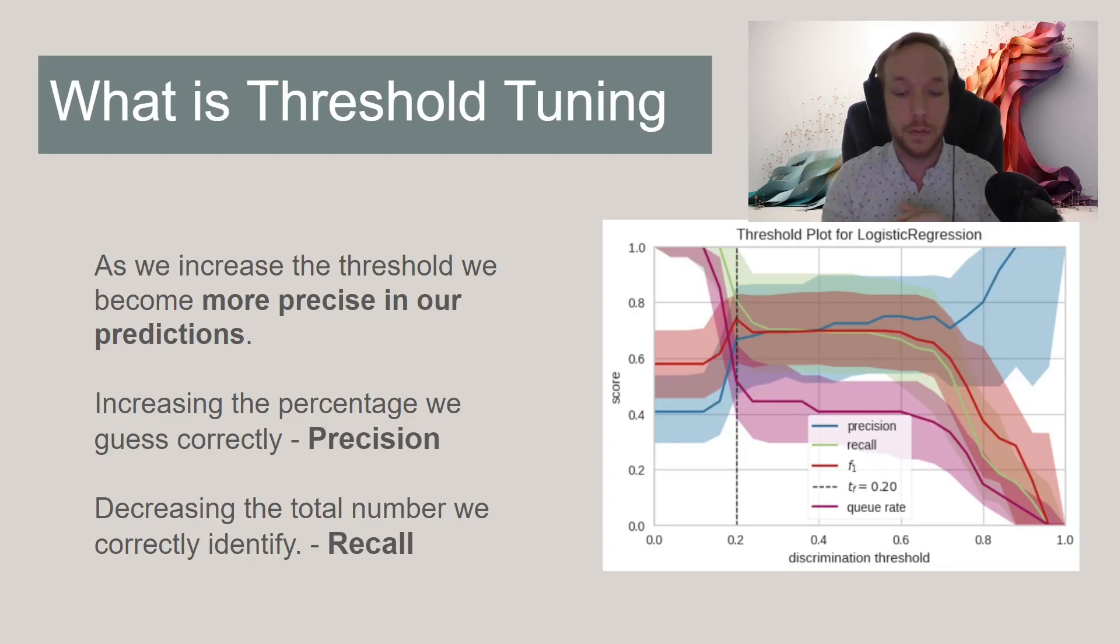So in the situation of if you're going to predict if someone defaults, and you say that if they default, it's a one, and you predict it's a zero, well, you say that they're not going to default, and they are, right? So you're going to lose a lot of money.